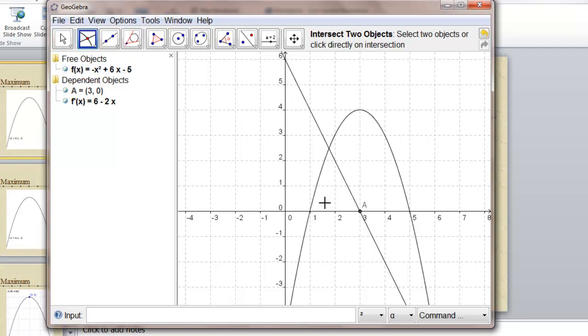Where is the maximum point? Wherever f of x equals 3. We can find that by making a line perpendicular to the x-axis. And where it intersects f of x is at 3, 4. That's the top point at that curve.